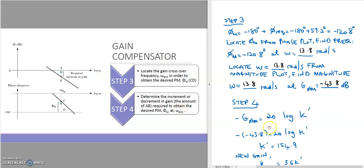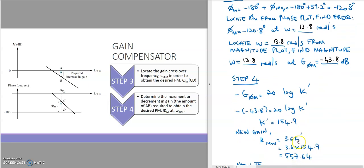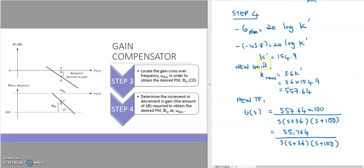The formula is: 20 log K′, where K′ is the new gain after adjusting based on the required phase and desired phase margin. Using the magnitude value of negative 43.8 dB, we get positive 43.8 equals 20 log K′. Solving this, we get K′ equal to 154.9. This is how we determine the new gain.